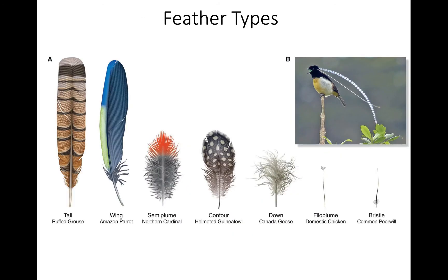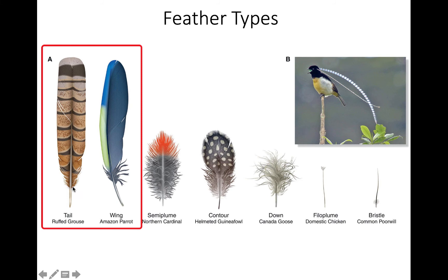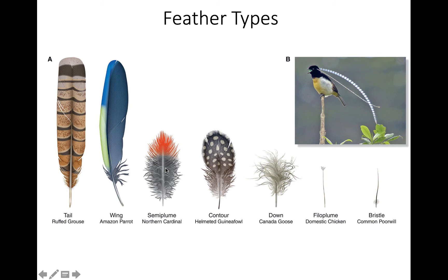There are different feather types. The flight feathers of the tail are called rectrices; the flight feathers of the wings are the remiges, and there are two different types of remiges. Flight feathers have a very obviously dominant pennaceous region with just a little plumulaceous region at the base where the calamus ends and the rachis begins.